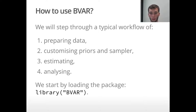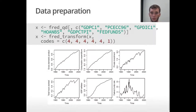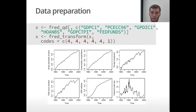We start by loading the package and then jump right into data preparation. For this example we chose to use six variables from the FRED-QD database, which include among others the gross domestic product and the federal funds rate. Before estimating the model we may want to transform these variables, for which the helper function FRED transform can be used. You can either provide your own transformations or use the ones suggested by the Federal Reserve Bank. After transforming the variables you can clearly see that they are non-stationary, which we have to keep in mind when setting up our priors.